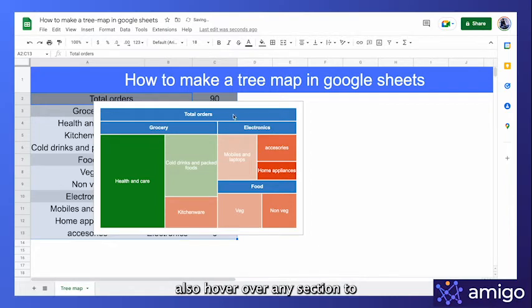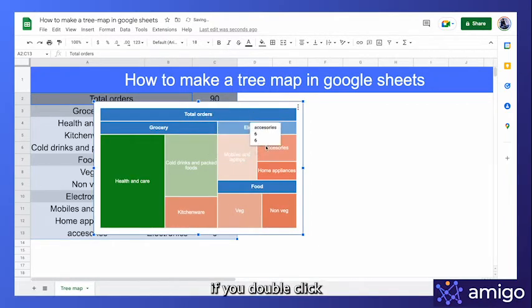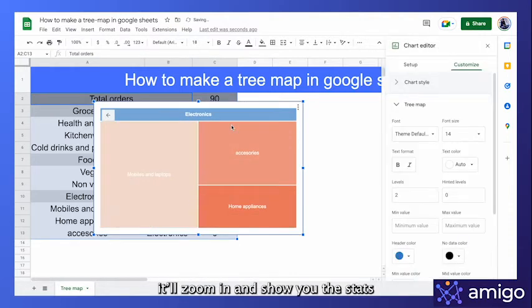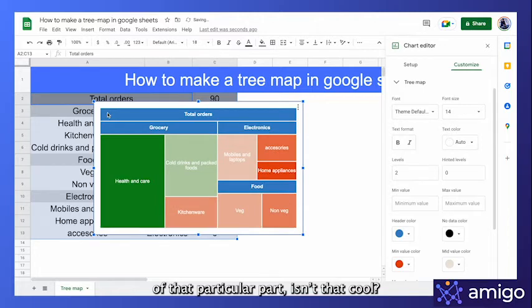Additionally, you can also hover over any section to see the number associated with it. If you double click on a specified part of the chart, it will zoom in and show you the stats of that particular part. Isn't that cool?